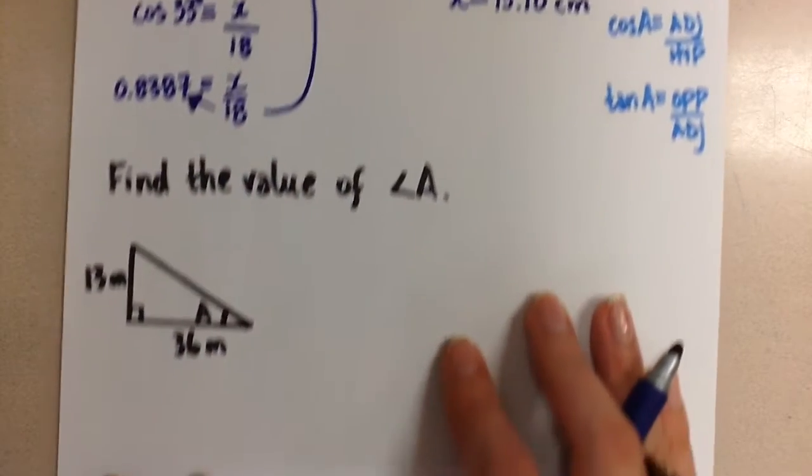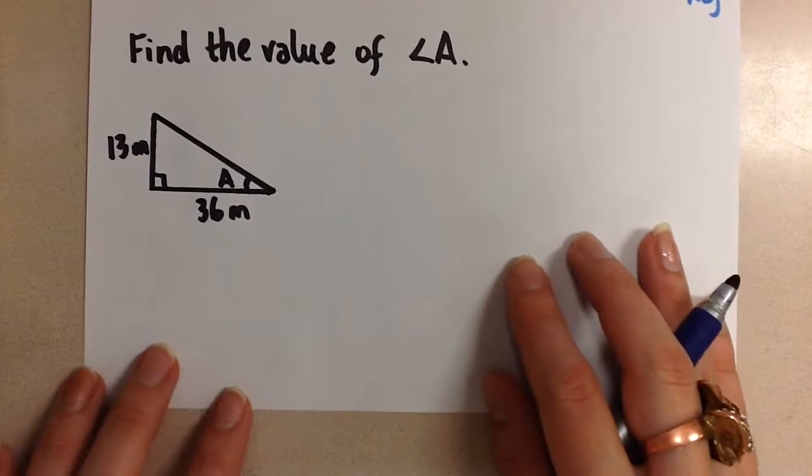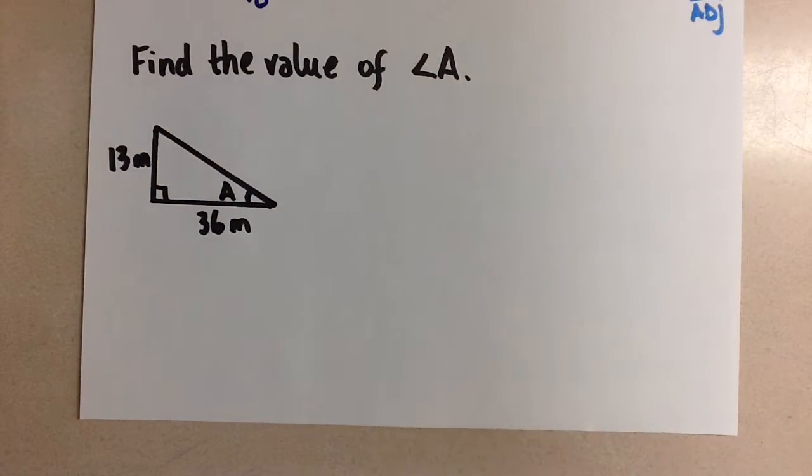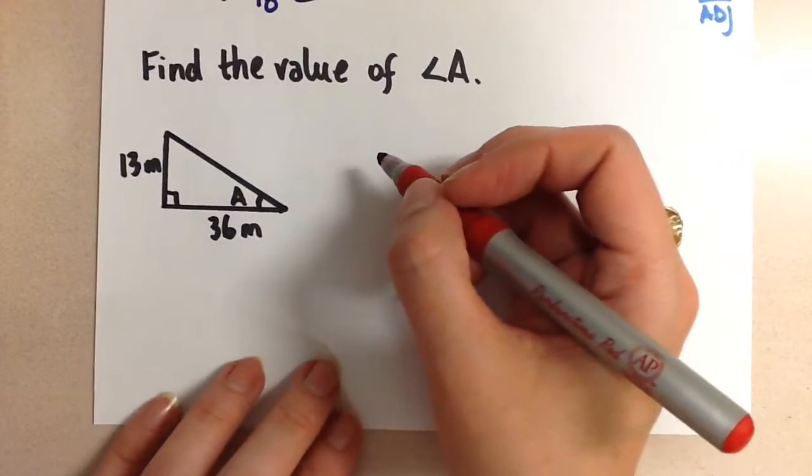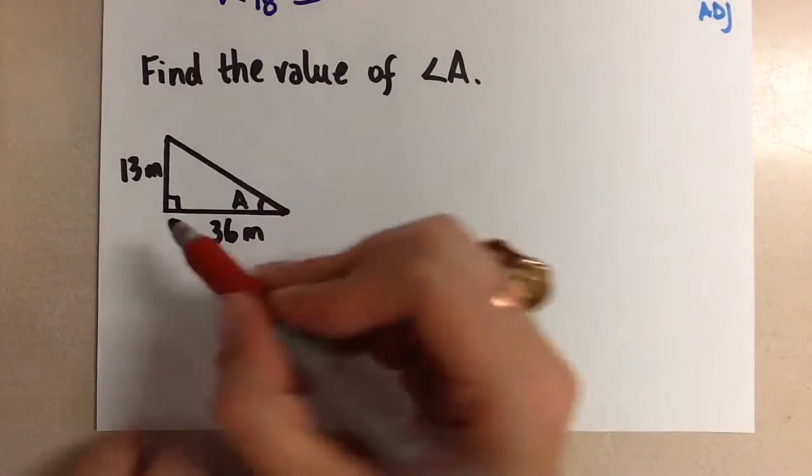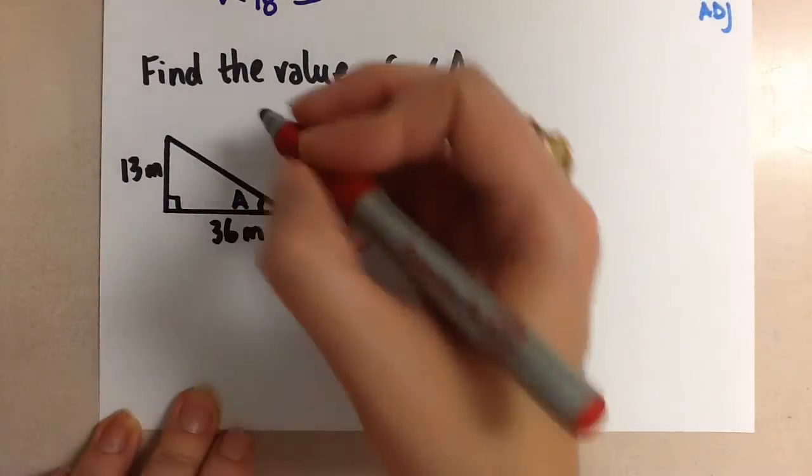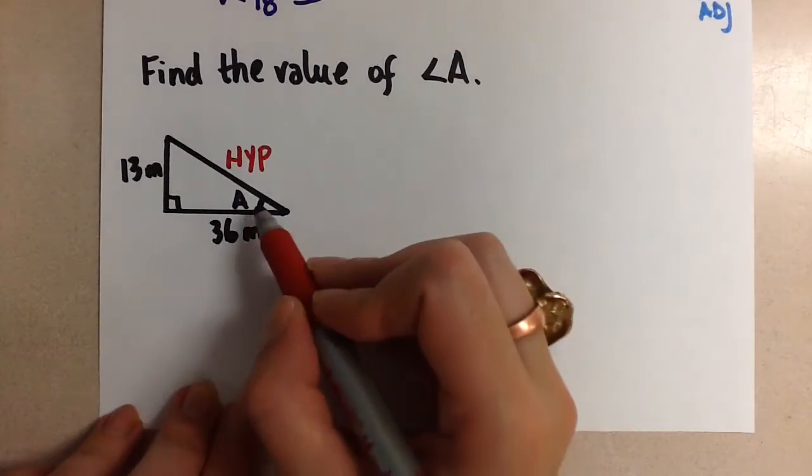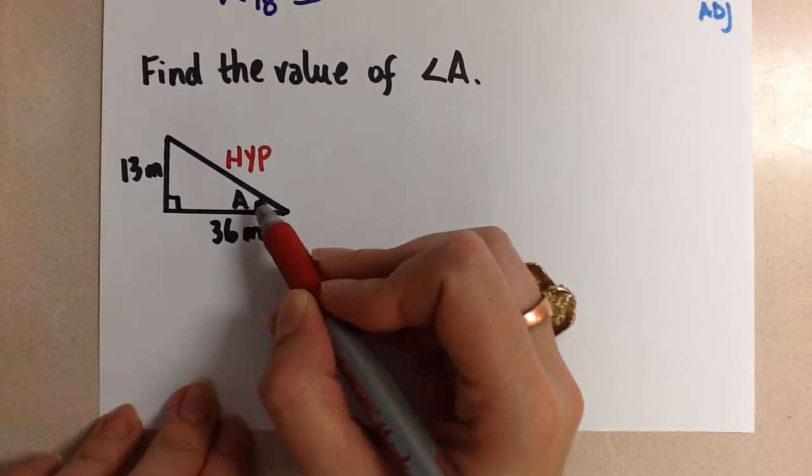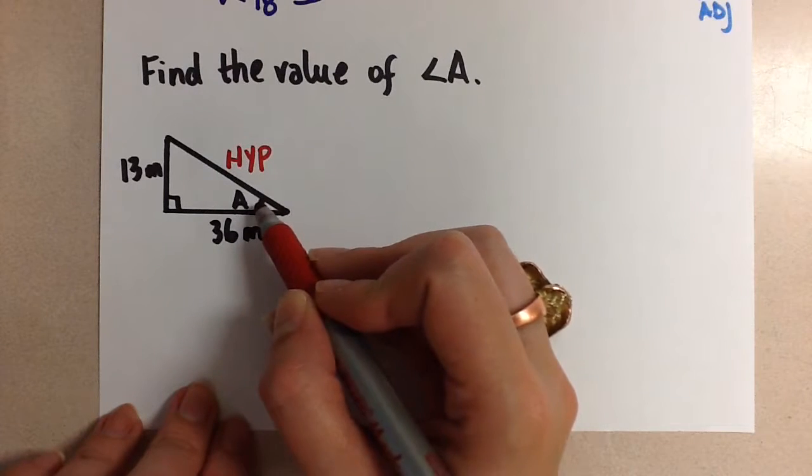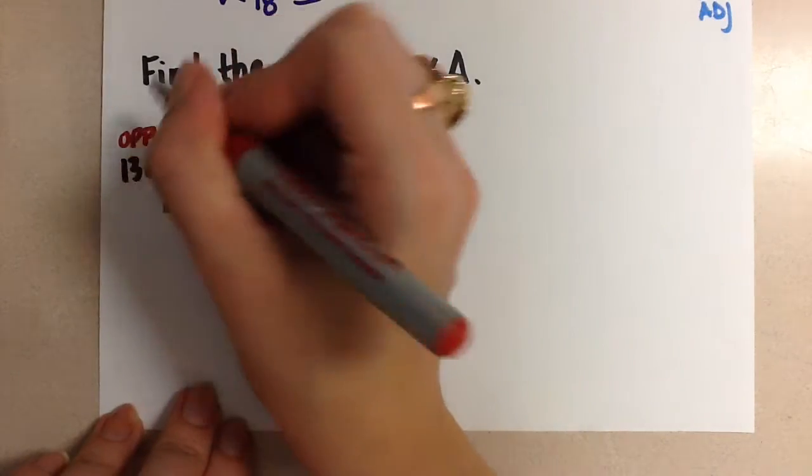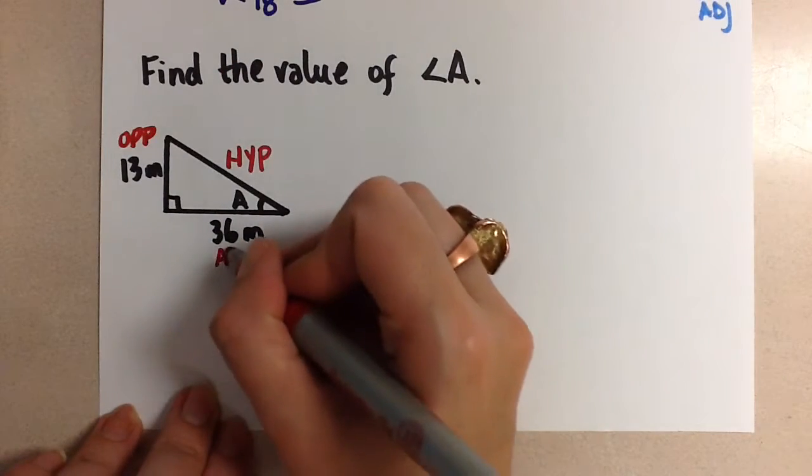Now let's look at a similar question, but now we're finding the angle value instead of a side length. So it's slightly different. We start the same way. We label our sides. So here, this is the right angle. We look directly across and label the hypotenuse. Next, we locate the angle in the problem. That's angle A. We don't know what it is, but we're going to find out what it is. So we need to use this angle. Directly across from it is the opposite side, and then next to it, the one that's left is the adjacent side.